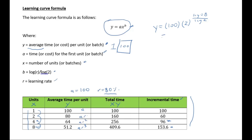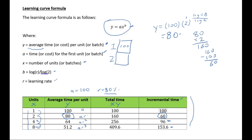This 80 is the average time for the first two units — the same as what we have in the table. To find the total time for the first two units, we multiply by x, which is 2: 80 × 2 = 160. Since the first unit took 100 hours, the incremental time is 160 minus 100 = 60. So the second unit took 60 hours to make — once again, matching the table.